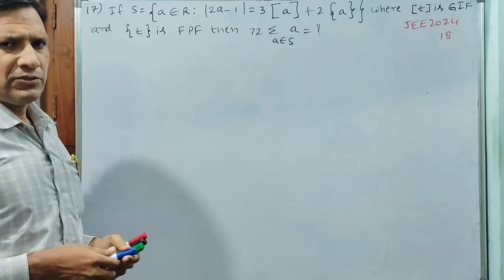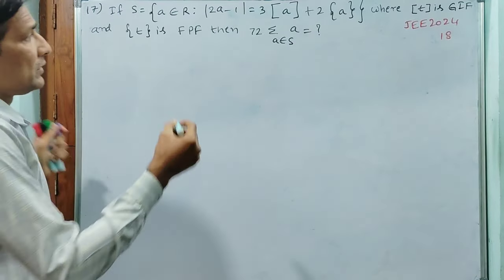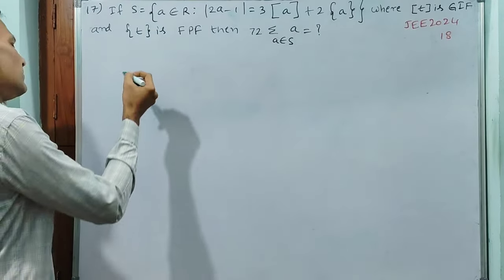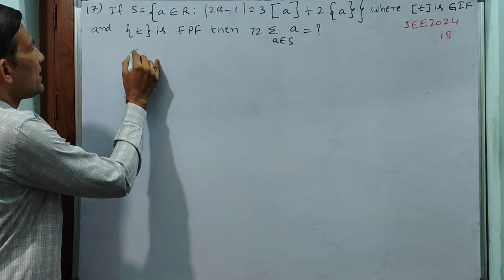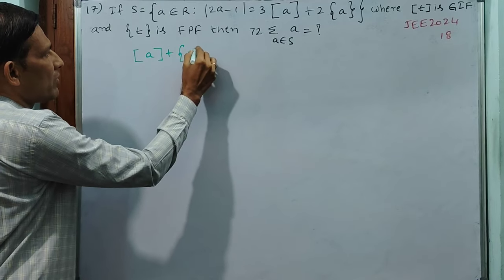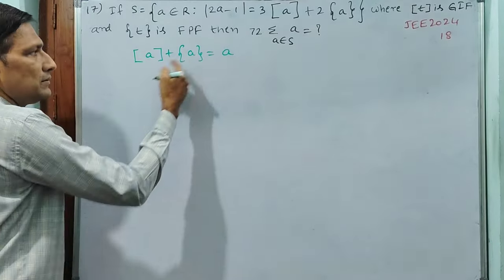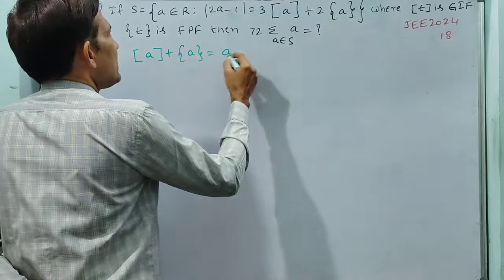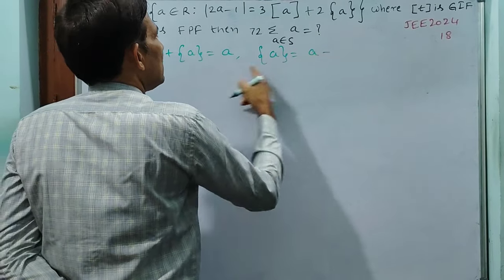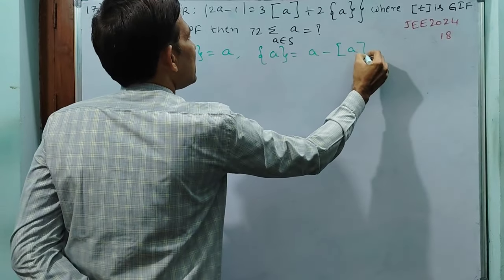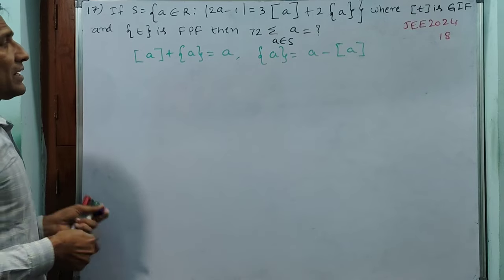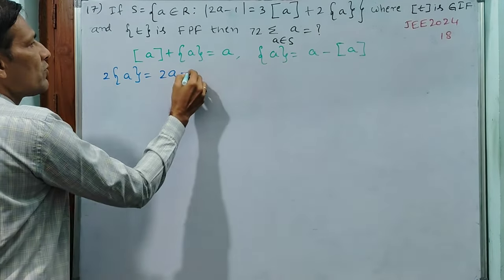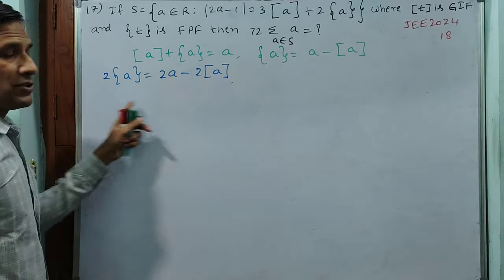Before that, let us recall what the fractional part function and greatest integer function are. The greatest integer function plus the fractional part function is equal to the function itself: [a] + {a} = a. So the fractional part {a} is equal to a minus [a]. If we multiply by 2, then 2{a} equals 2a minus 2[a].